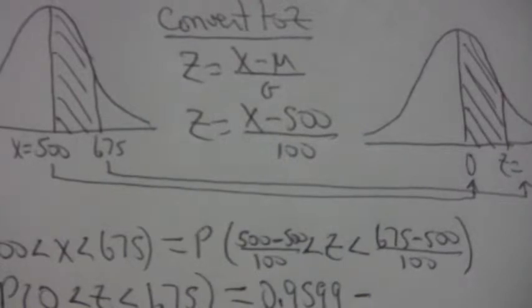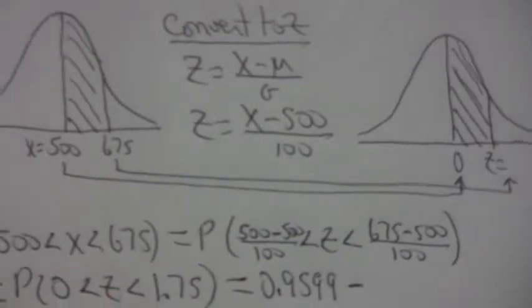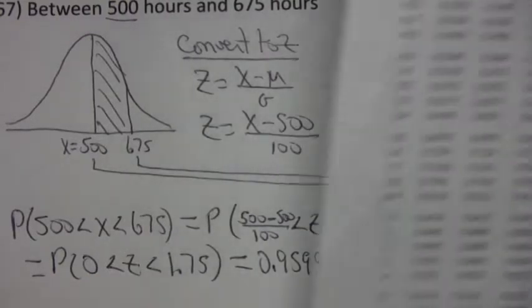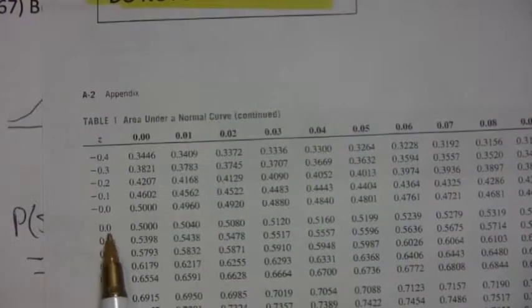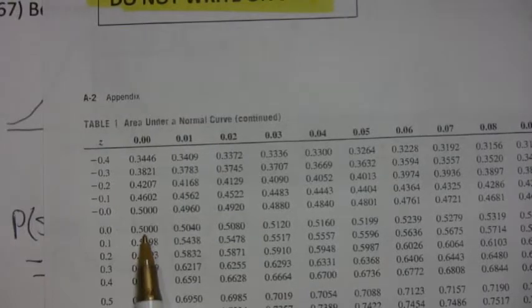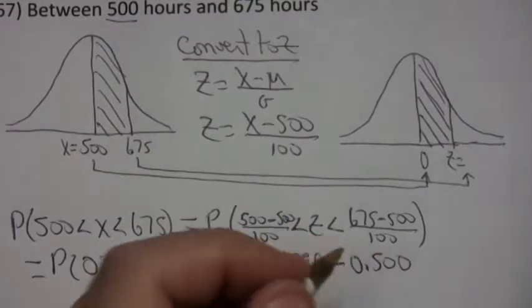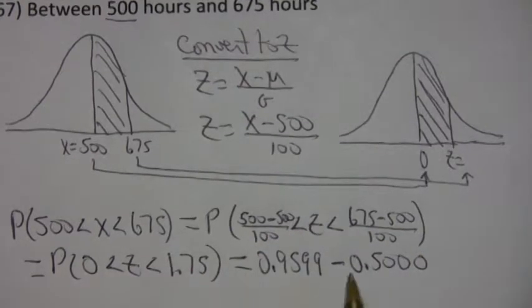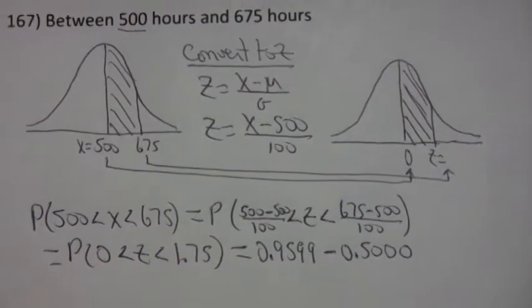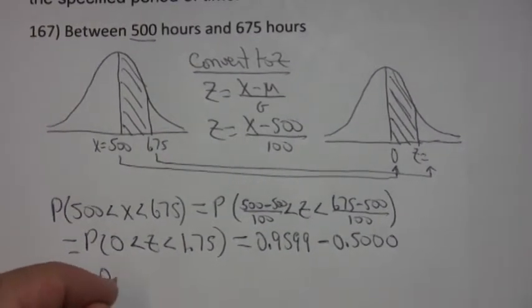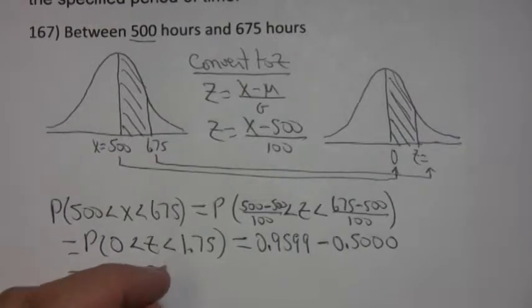And then I subtract and look up the small number. I know that's going to be 0.5 because it's 0. Just go to 0 and look it up, and it's 0.5. And so when you subtract, you end up with 0.4599.